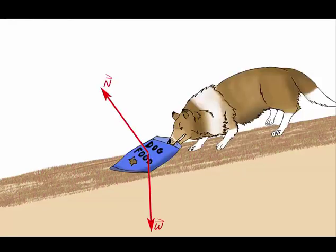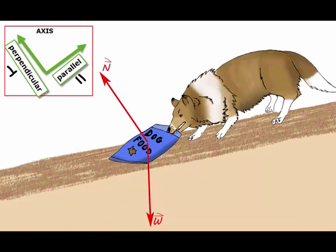So we have the bag's weight and the normal force. If you look closely, you will notice that the forces are angled differently. Since the slope is at an angle, it is useful to define coordinate axes that are parallel and perpendicular to the slope.